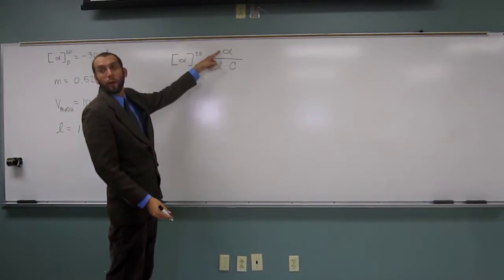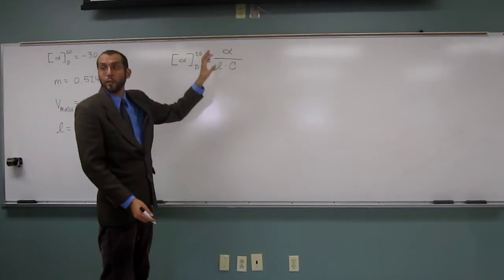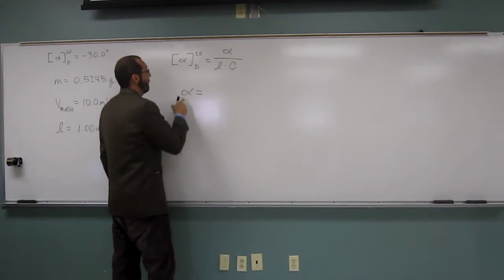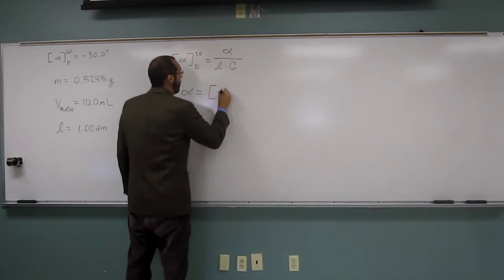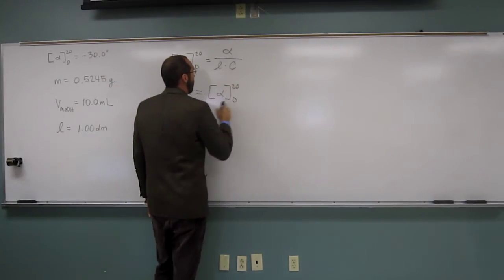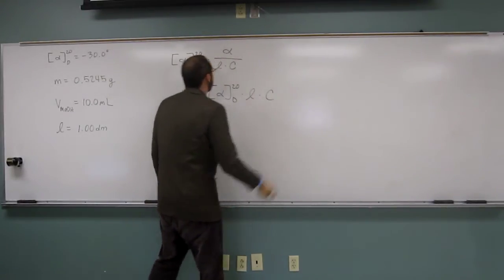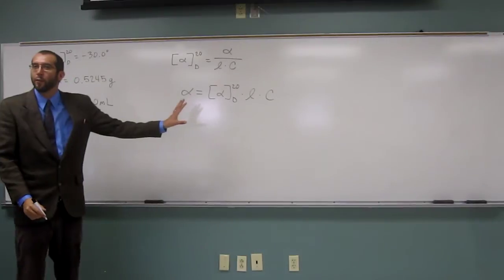This time we're looking for observed though, right? So we're going to have to rearrange this equation to solve for it, okay? So I'm just going to rearrange it. Observed equals alpha D, or specific, times path length times concentration. Is everybody okay with that?